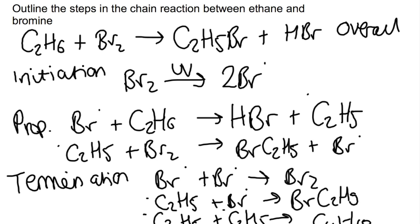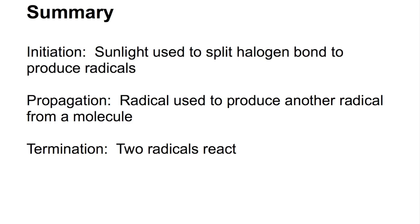Let's look at a summary of the three steps. The first step uses UV light found in sunlight to split up the halogen bond to produce radicals. This is one of the reasons that chlorofluorocarbons, or CFCs, were a big problem — if they got up into the upper atmosphere they were split up using sunlight to produce halogen radicals which reacted with ozone and started to break down the ozone layer. Propagation steps involve a radical reacting with a molecule to produce another radical, and termination steps involve two radicals reacting together to produce a stable molecule.